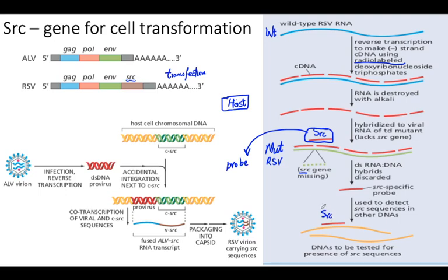The interesting finding was that we were expecting only infected cells — cells made cancerous by Rous Sarcoma Virus infection — to contain the Sarc gene. But the reality was opposite: both infected and uninfected cells showed the presence of Sarc. This means the Sarc gene is normally present in the host cell, making it a proto-oncogene. When it is active and driving proliferation, it is called an oncogene.